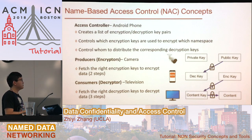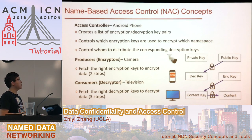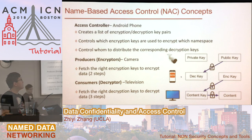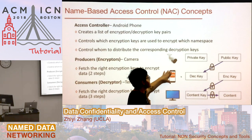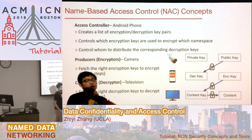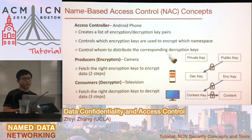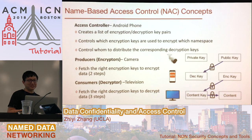In the NAC triangle, the access manager defines the encryption policy and notifies the encryptors, so they know which key to use to encrypt the data. For the decryptor, the access manager grants access by giving the decryption key to the decryptor so they can decrypt the data. Here is an example: an Android phone acts as access controller and wants to control that only the television can visit the data produced by the camera.